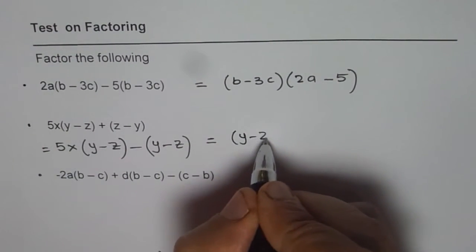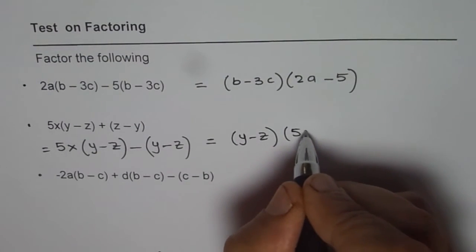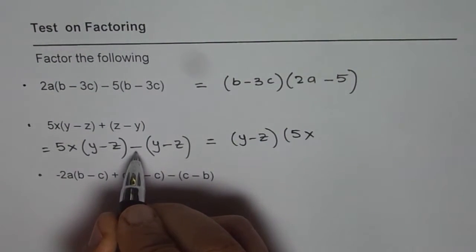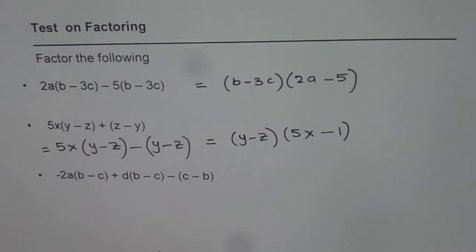Now we can factor this. y minus z is a common factor. We get 5x from the first term and what do we get here? Minus 1. Good.